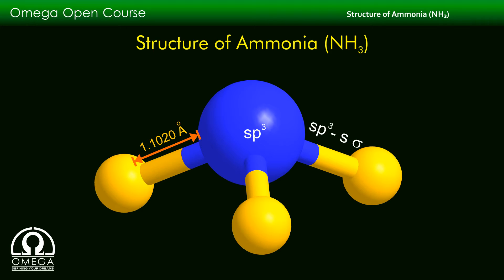The nitrogen-hydrogen bond length is 1.102 angstroms. The H-N-H bond angle is 107 degrees, which is less than the usual tetrahedral angle of 109 degrees 28 minutes. This is because of the greater lone pair–bond pair electronic repulsions as compared to bond pair–bond pair electronic repulsions.